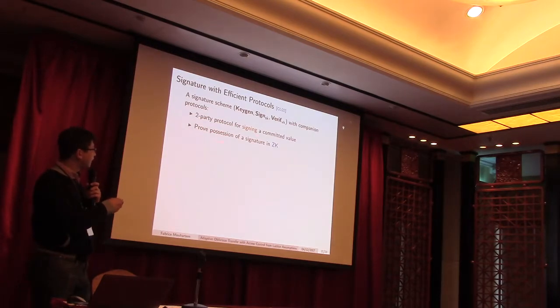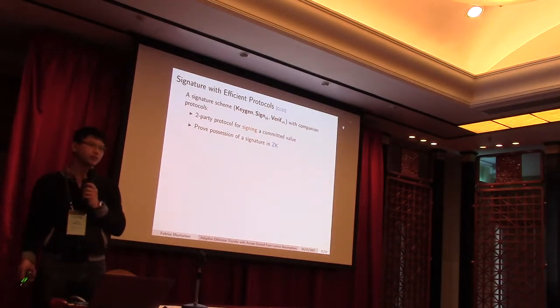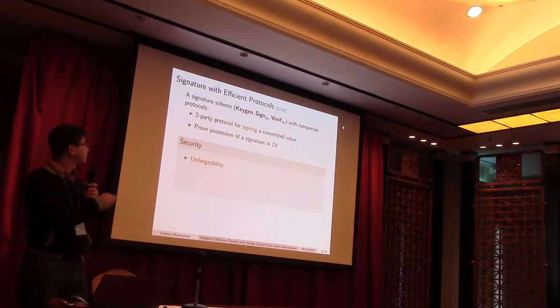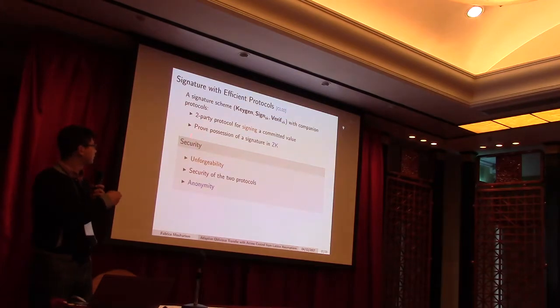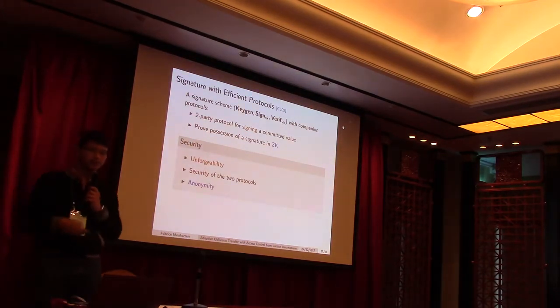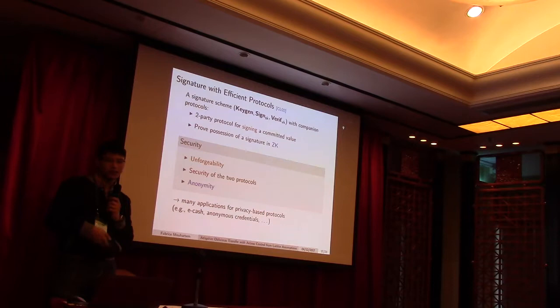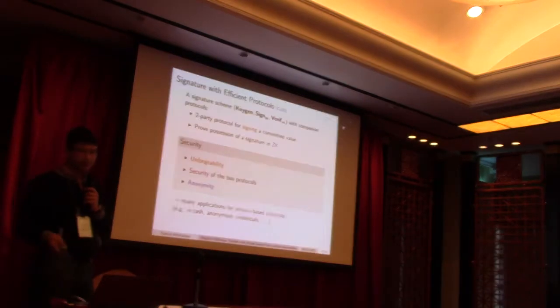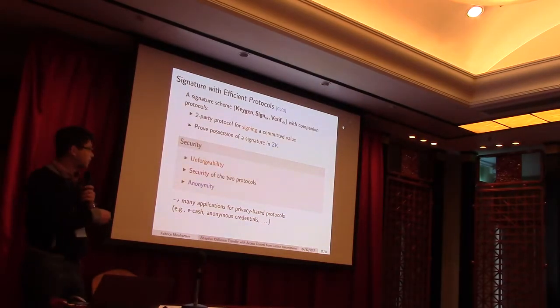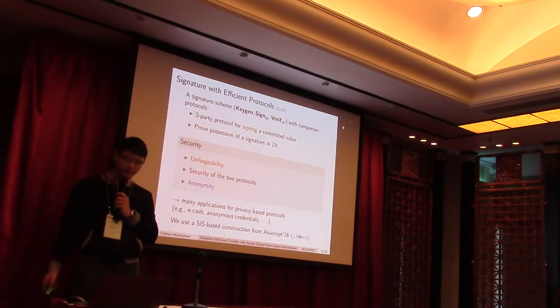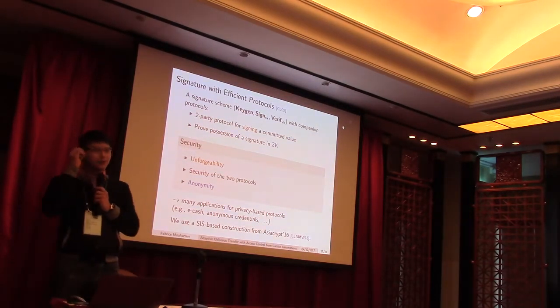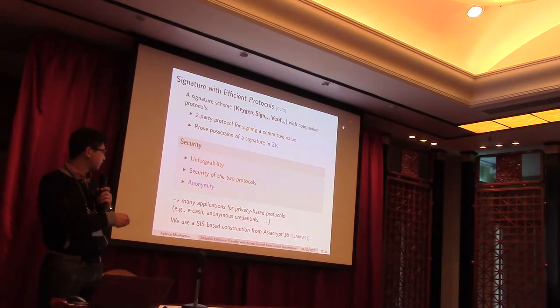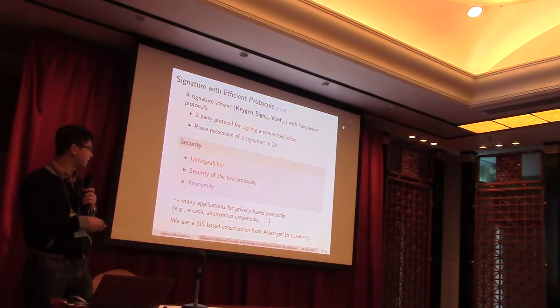And the proof of zero-knowledge that allows us to prove possession of a signature in a zero-knowledge manner. And the security of this scheme is unforgeability of the signature, security of both protocols, and also anonymity, which comes from the zero-knowledge proofs. And it's interesting in many privacy-based protocols because, for instance, it allows to enable e-cash or anonymous credentials. And, as I said before, we use this construction, which has been proposed at Asiacrypt last year for group signatures.